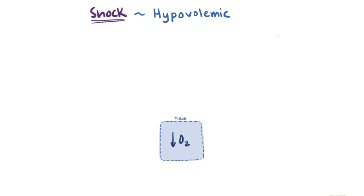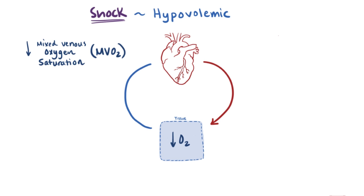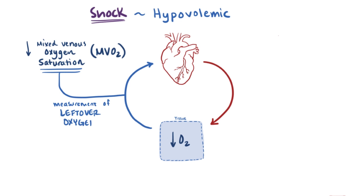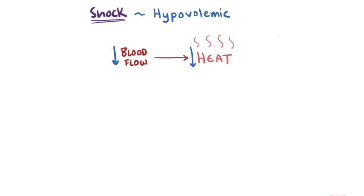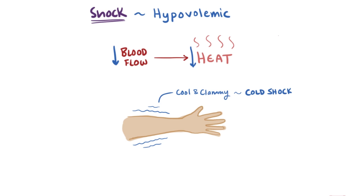A key indicator of tissues not getting enough oxygen in hypovolemia is decreased mixed venous oxygen saturation, or MVO2 — the amount of oxygen bound to hemoglobin in blood returning to the right side of the heart from tissues. If blood volume is down, oxygen delivery is down, so less is left over and MVO2 will be low. Since blood flow also provides heat to tissues, reduced flow causes the skin to feel cool and clammy, making hypovolemic shock a cold shock.